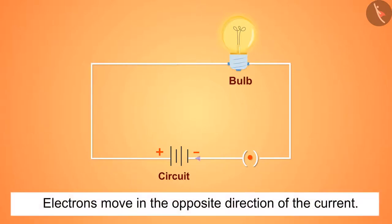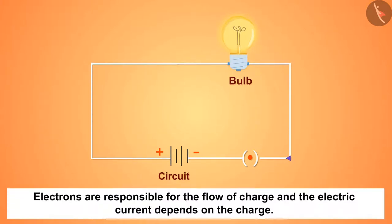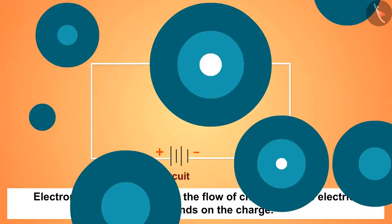It is also to be noted that electrons move in the opposite direction of the current. But we also know that electrons are responsible for the flow of charge and the electric current depends on the charge. Then why does the electric current move in the opposite direction?